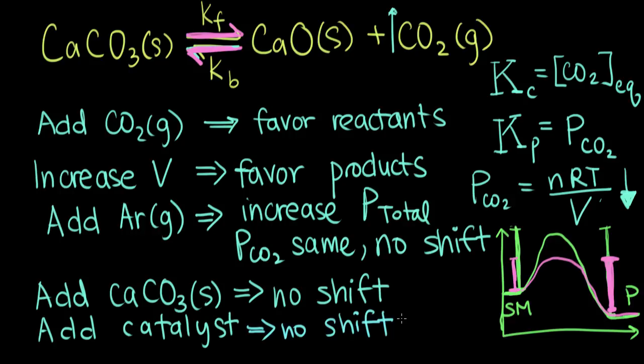The main things to remember from this problem — the things I find most tricky — are that adding an inert gas will increase your total pressure, but it won't actually change any of your partial pressures, so it won't shift your reaction from equilibrium. The same is true for solids and catalysts. All three of those things — inert gases, solids, and catalysts — will not shift your reaction from equilibrium.